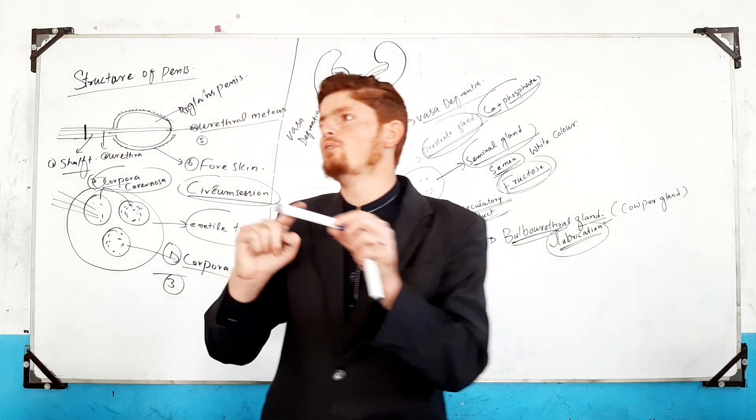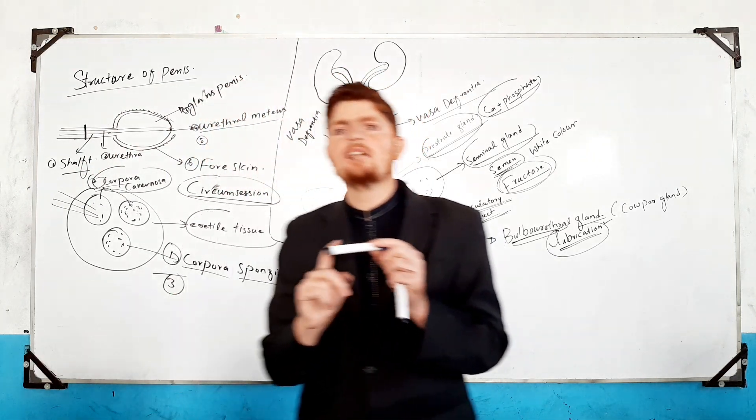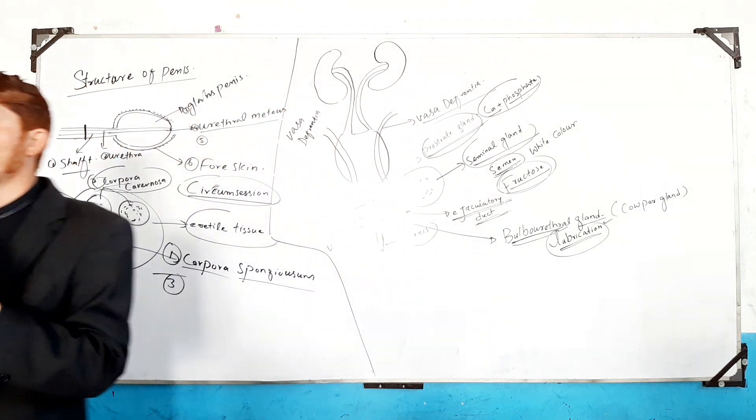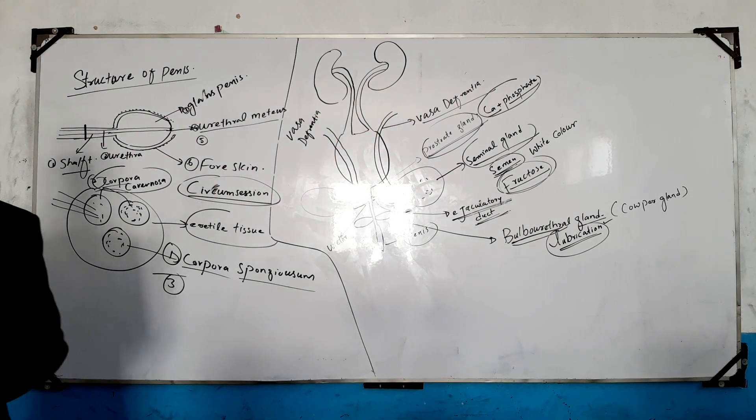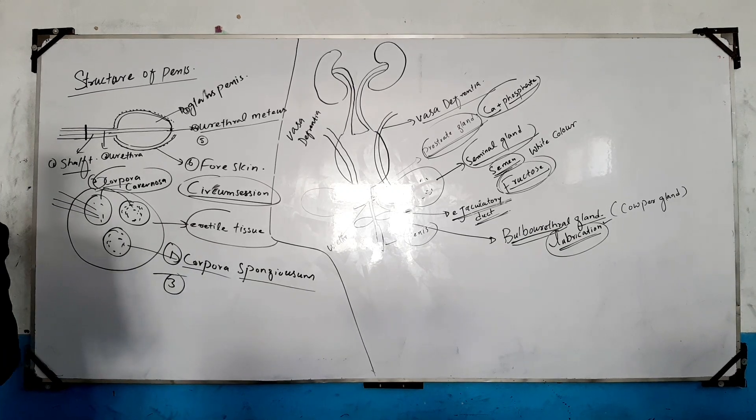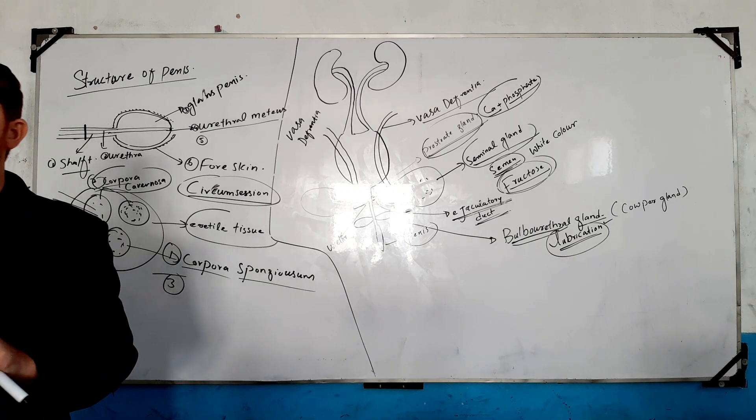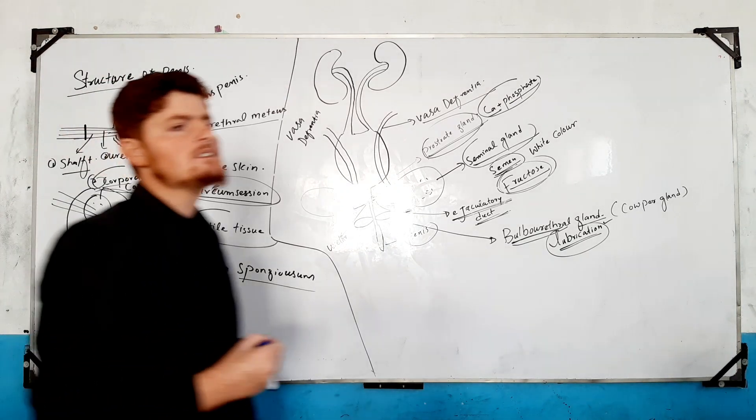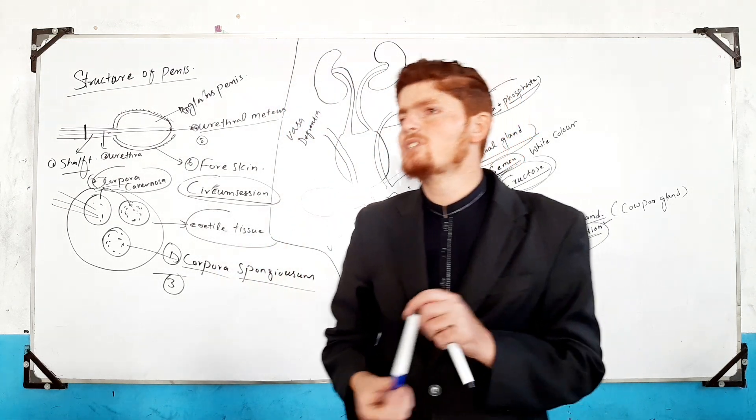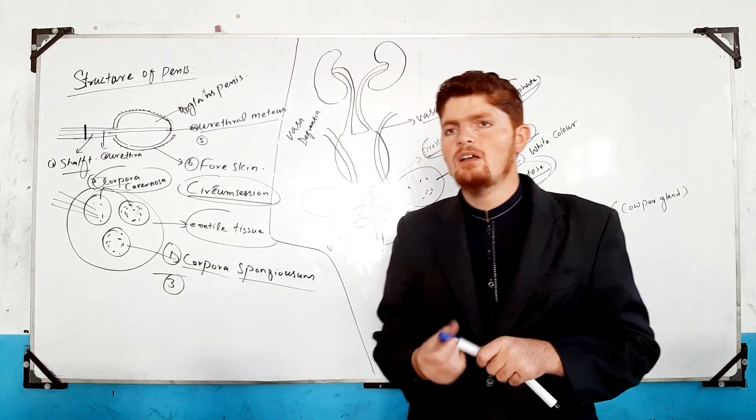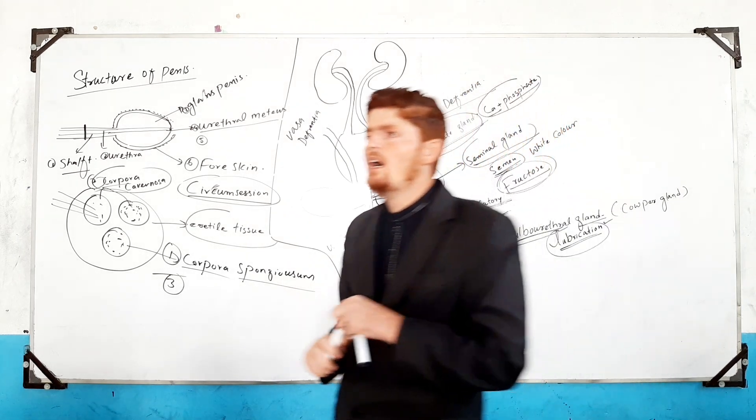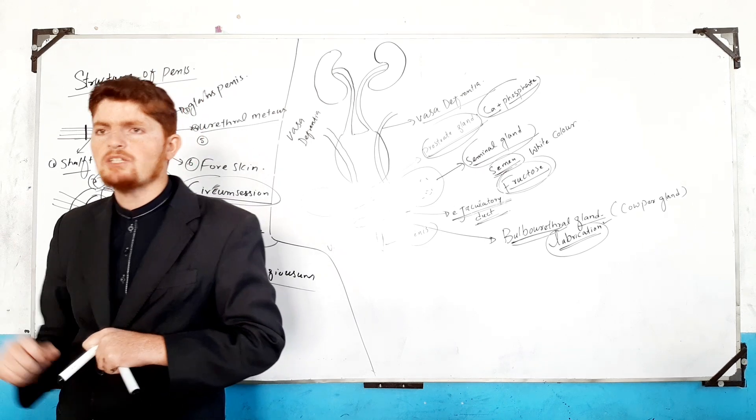This one is the glans penis. The head is the glans. Every skin is different. Circumcision - why do you have to do it? To prevent UTI infection, urinary tract infection.